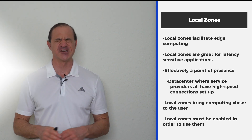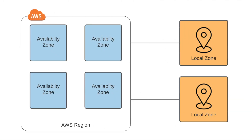Let's look at this graphically. You've got a giant region with availability zones inside of it, and then the local zone is connected to the region at certain points of presence in certain cities for edge computing and low latency applications.